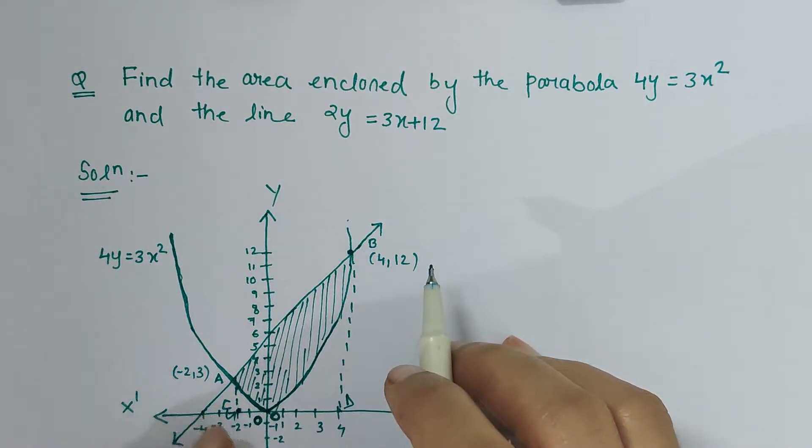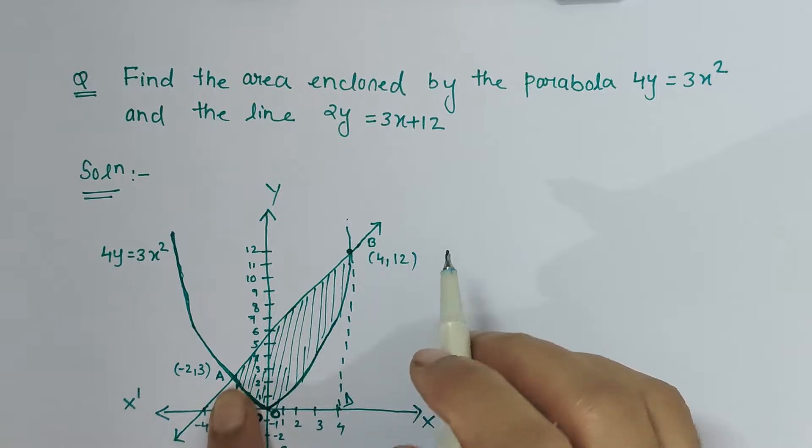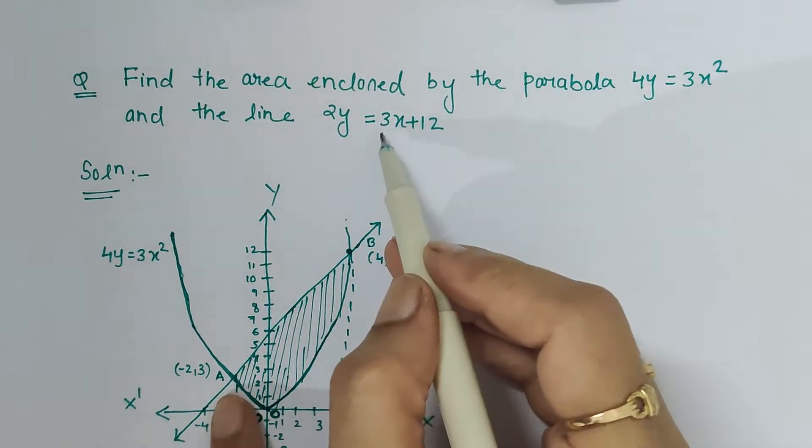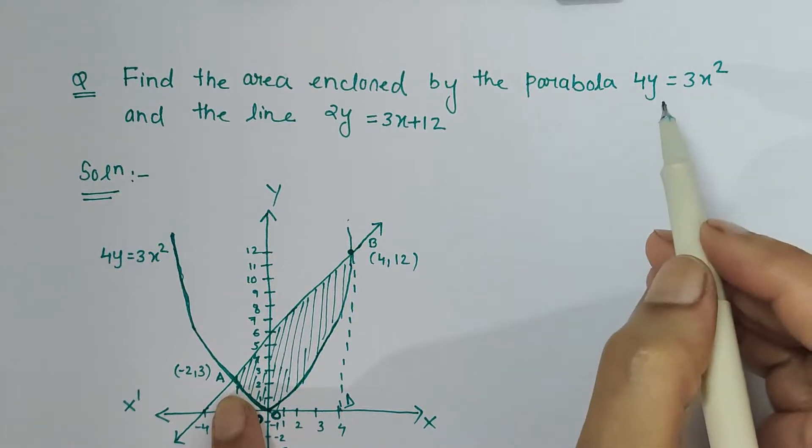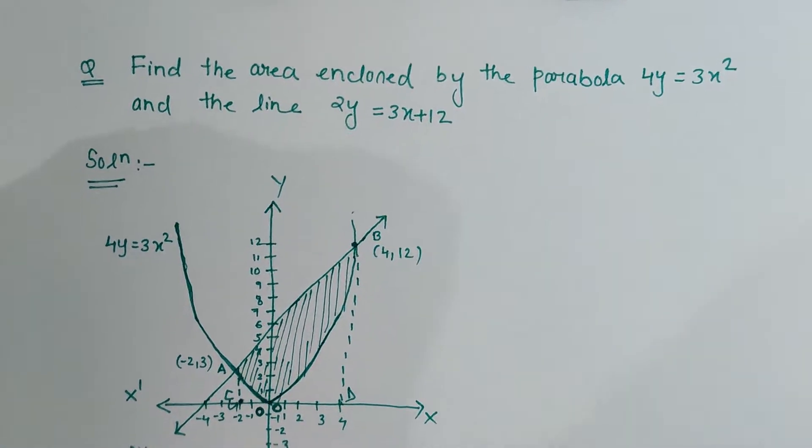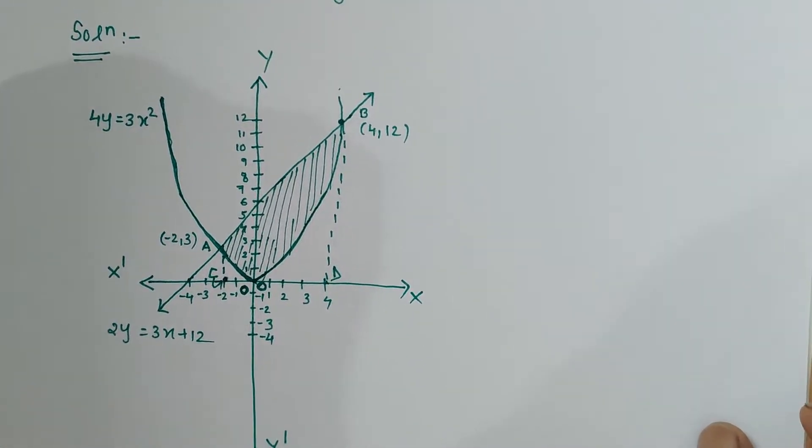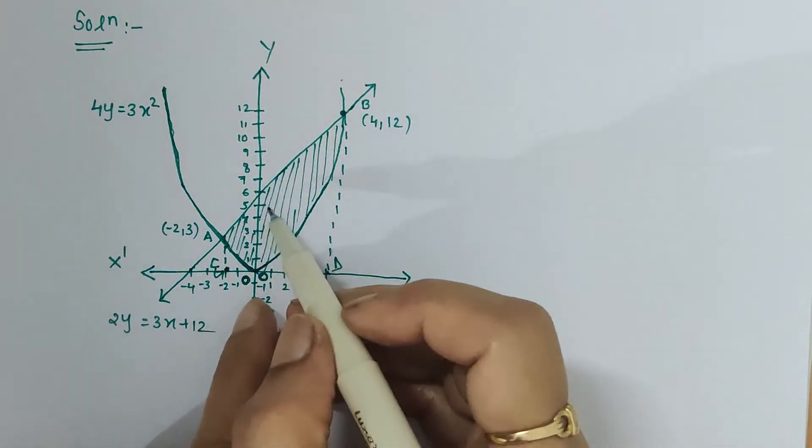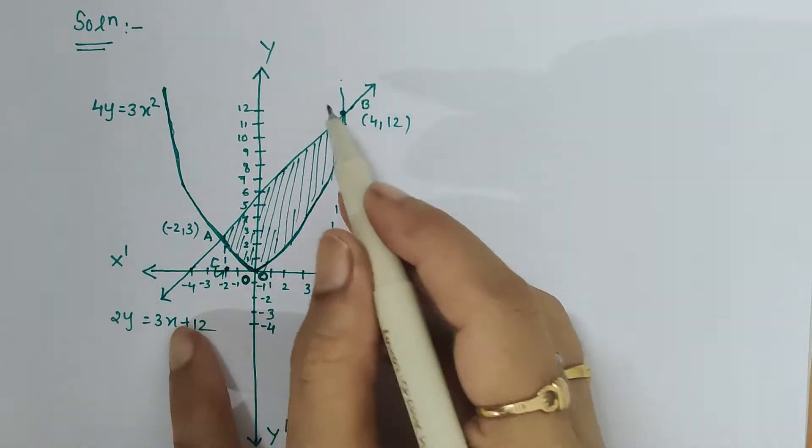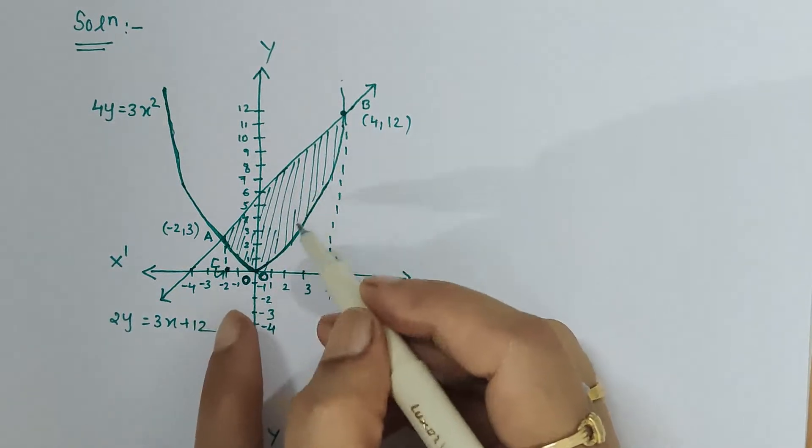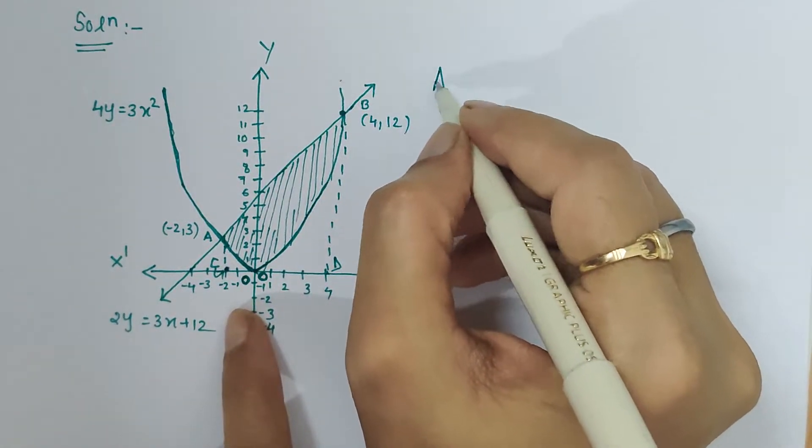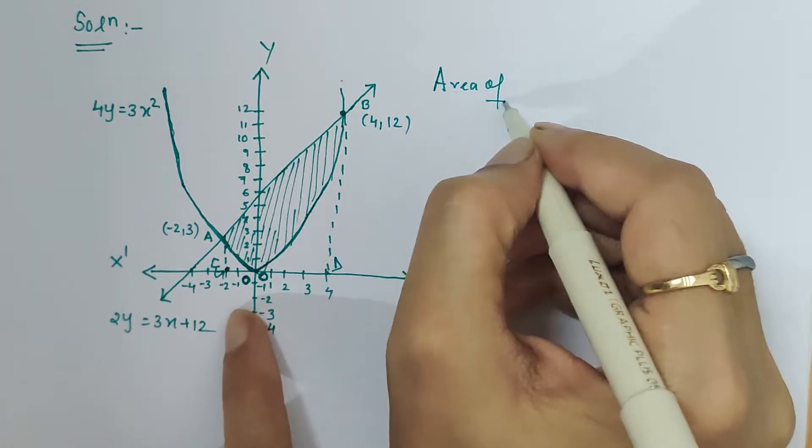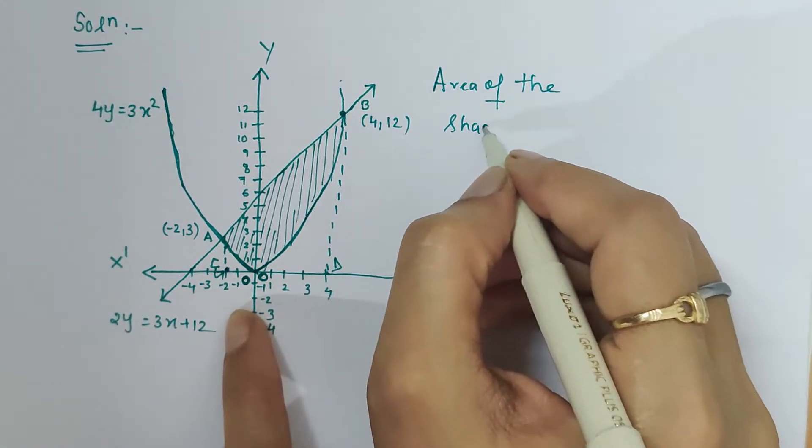The points of intersection are (4, 12) and (-2, 3) for this line equation and parabola. Now let's switch to the important part: how to find area enclosed by the parabola and the line. This is the shaded region which is to be calculated. We will write area of the shaded region.